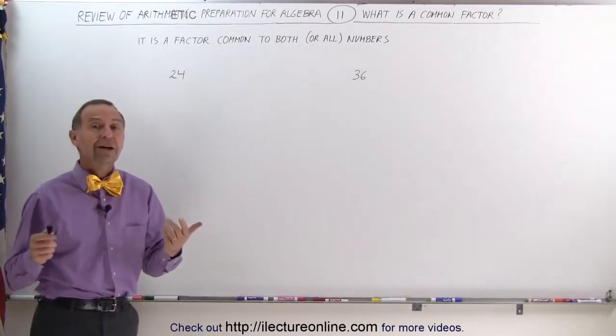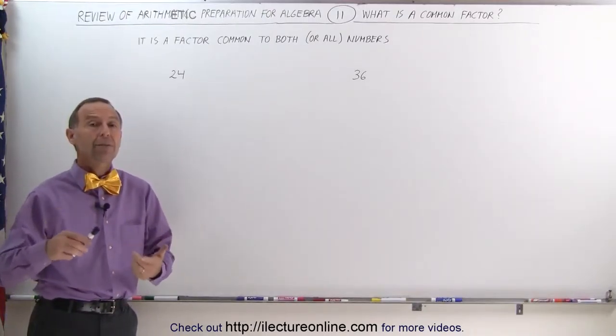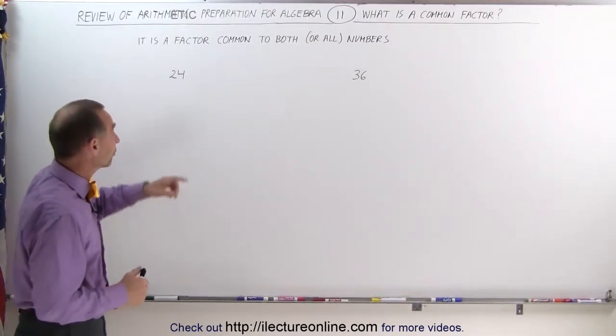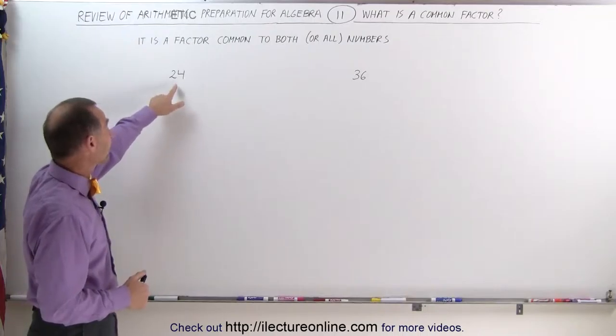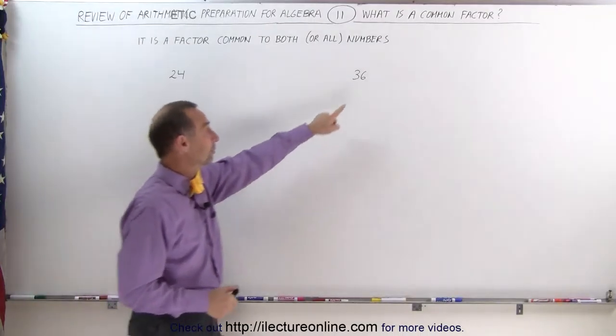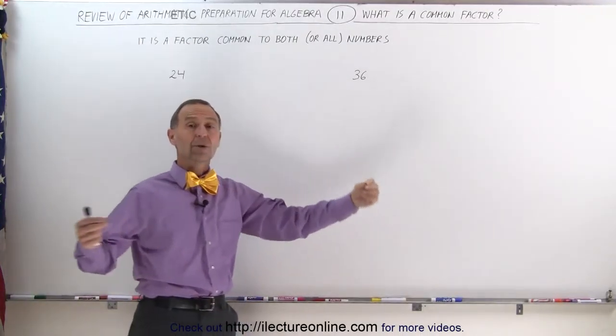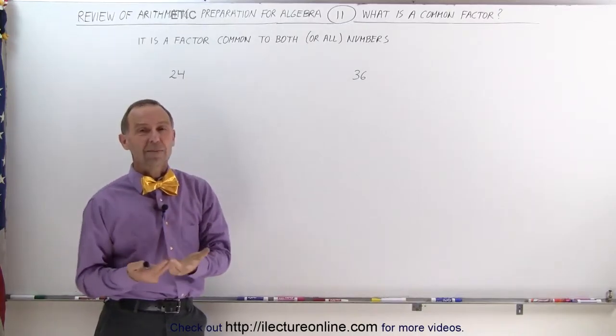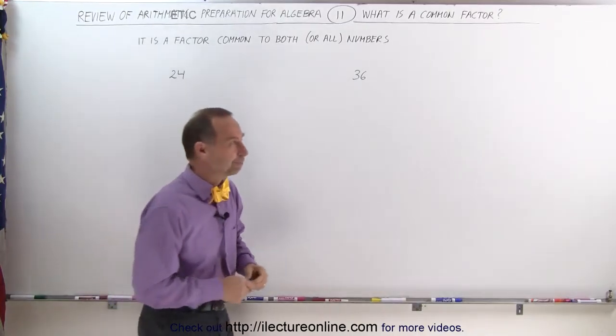We're going to try to find all the common factors. That means we're going to find all the factors of 24, we're going to find all the factors of 36, and then the ones that are the same — those are the common factors.